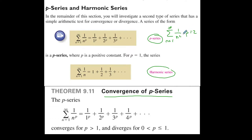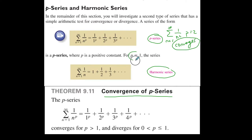We said that p was 2 — in that case p is greater than 1, so that means that this series will converge. And the harmonic series always has p equal to 1, and therefore the harmonic series will always diverge.